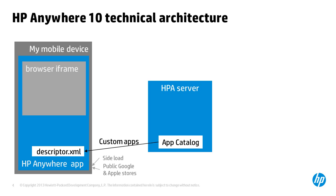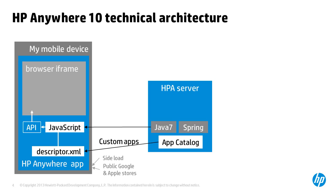Server programs are written in Java 7 using the Spring framework. The JavaScript of each custom app calls functions in the API provided by the HB Anywhere app, which dynamically injects resources for display.